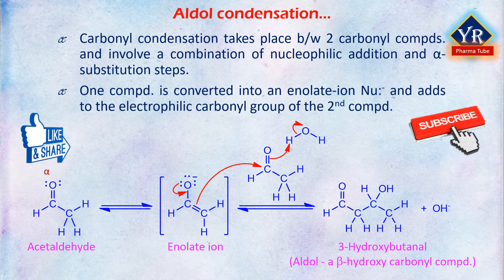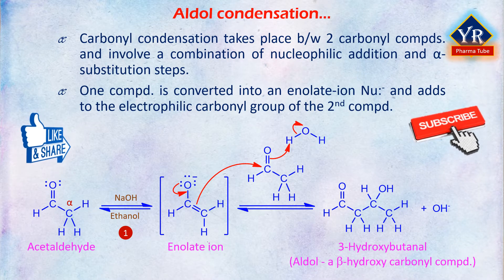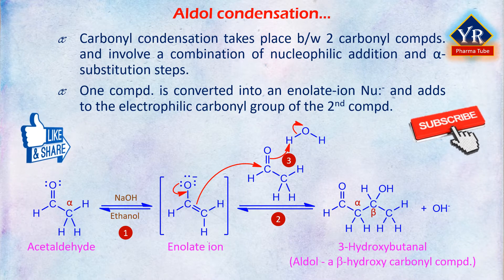The general mechanism of the process is shown here. In the first step, a carbonyl compound with an alpha hydrogen atom is converted by base into its enolate ion — that is, the base removes a proton on the alpha carbon to form a resonance-stabilized enolate. In the second step, the enolate ion acts as a nucleophilic donor and adds to the electrophilic carbonyl group of the second carbonyl compound. And in the final step, protonation of the tetrahedral alkoxide ion intermediate gives the neutral condensation product and regenerates the base catalyst.